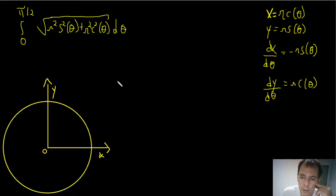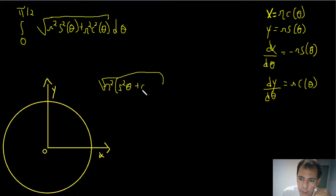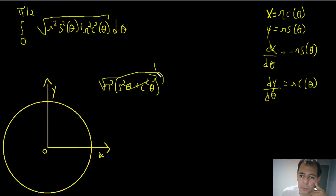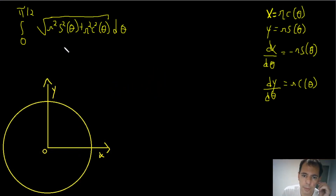This simplifies nicely. We factor out R² from under the square root, leaving sine² θ plus cosine² θ. By the Pythagorean trigonometric identity, sine² θ plus cosine² θ equals 1. So we have the square root of R², which is just R.